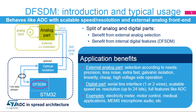The DF-SDM peripheral is a new digital peripheral inside STM32 microcontrollers. It behaves like a standard ADC with the analog part outside the microcontroller. The main benefit is to move the analog part outside of the microcontroller and propose an internal digital part with a wide range of features. The DF-SDM represents the digital part, which is connected to the analog part through a fast serial interface.